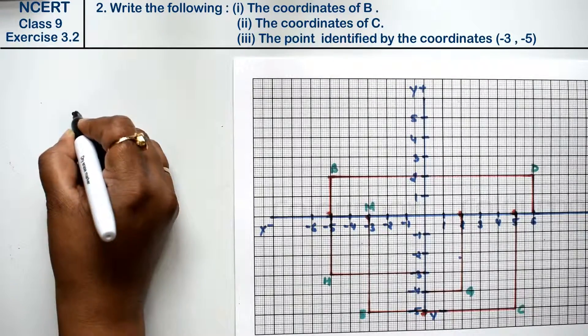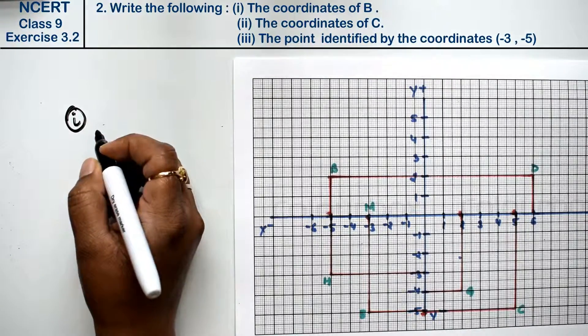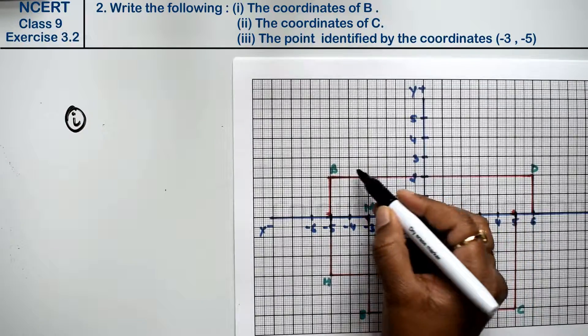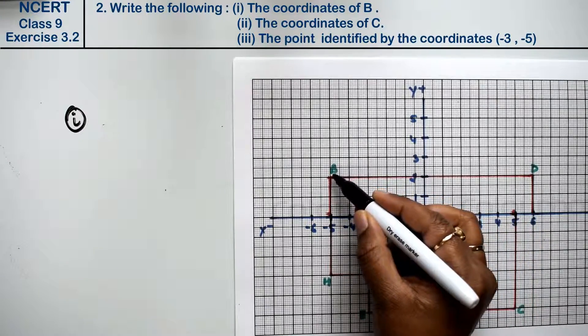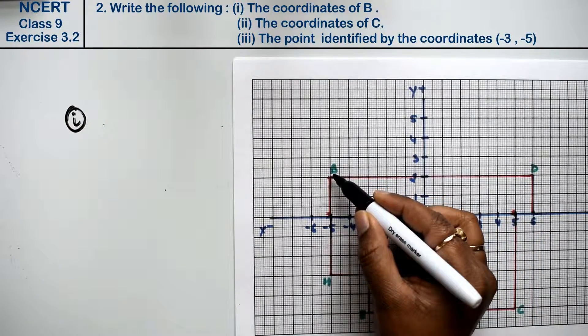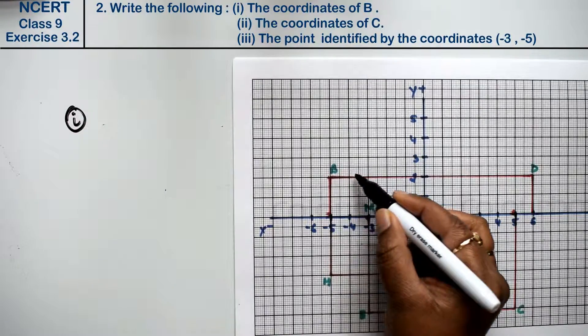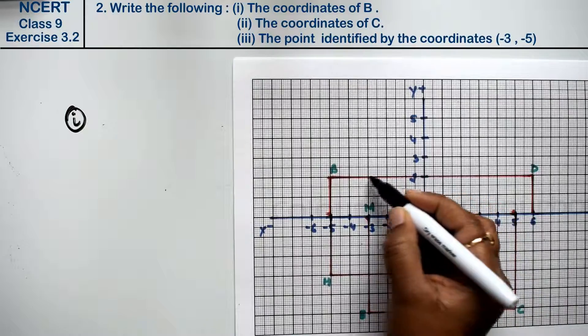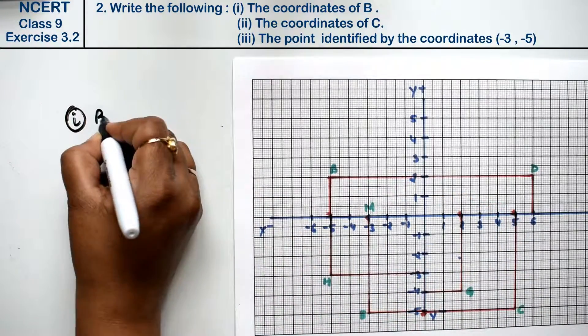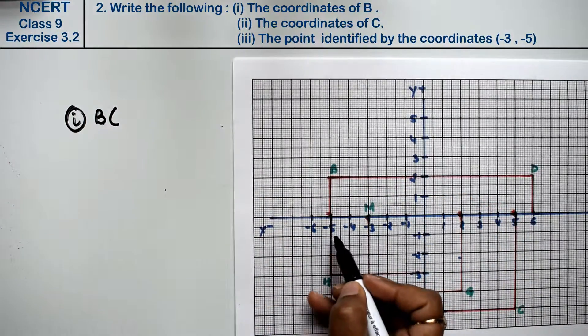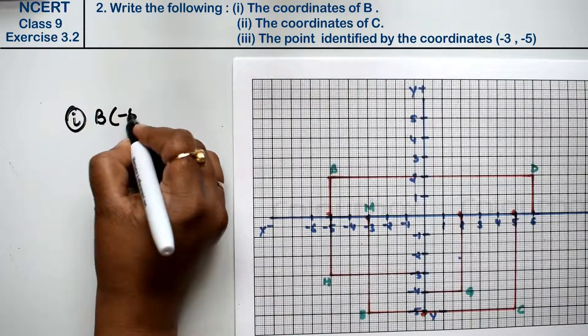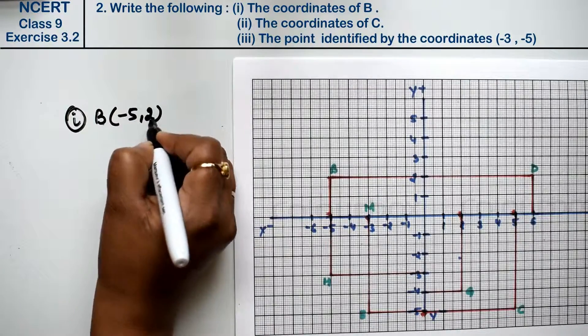First part is the coordinate of B. This is B point. What is the coordinate of its points? Look, this is x minus 5 and y 2. What is the coordinate of B? First, we will keep the value of x, that is minus 5, and then y, that is 2. This is the answer.